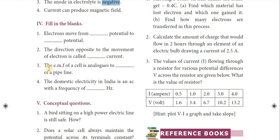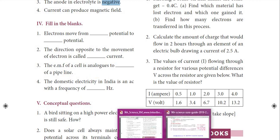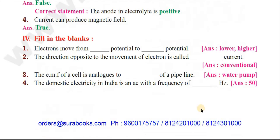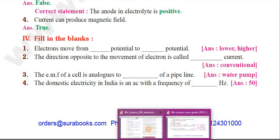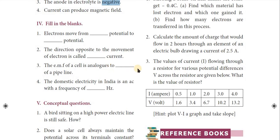Second question: the direction opposite to the movement of electrons is called dash current. The answer is conventional current. Third question: the EMF of a cell is analogous to dash of a pipeline. The answer is water pump of a pipeline.